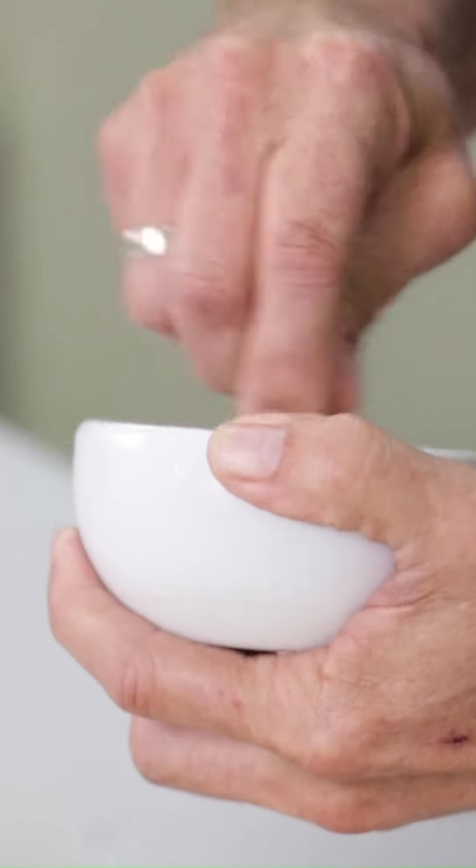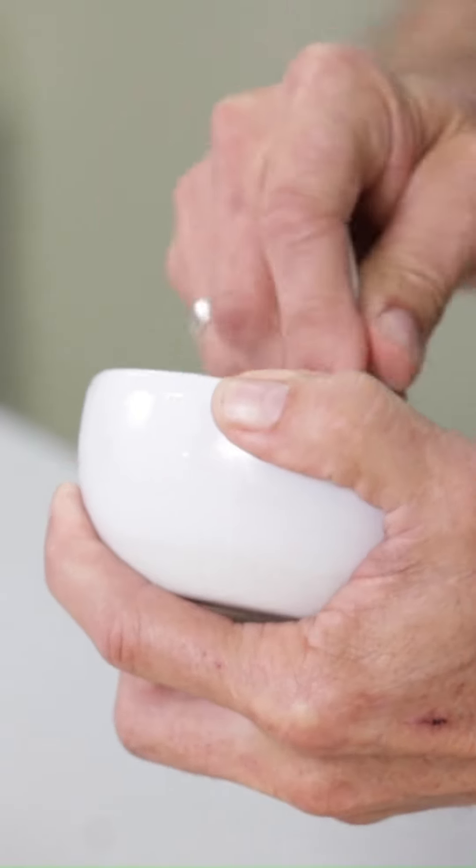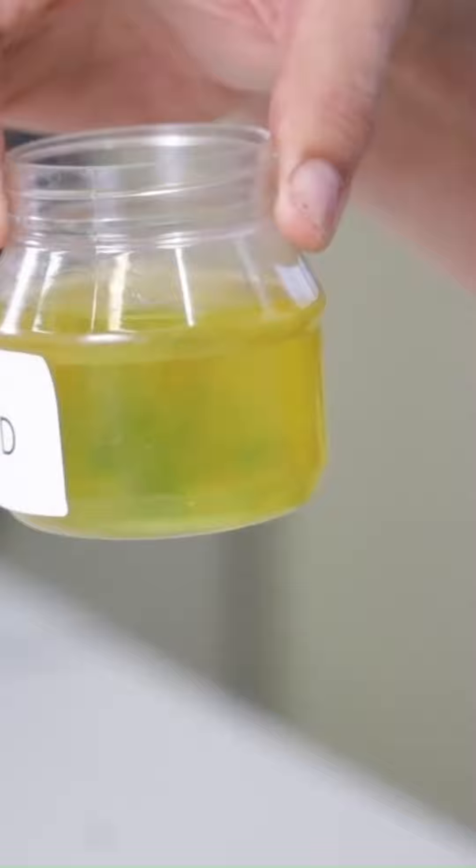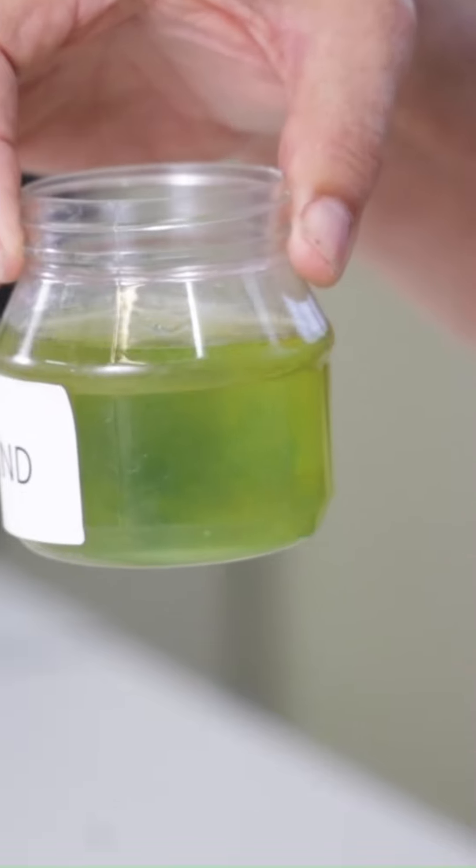Put simply, the higher the lime content per load, the more effective at neutralising acid in the load, the higher the Bulk NV rating.